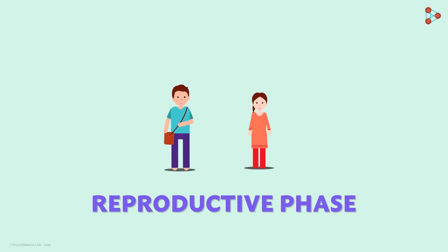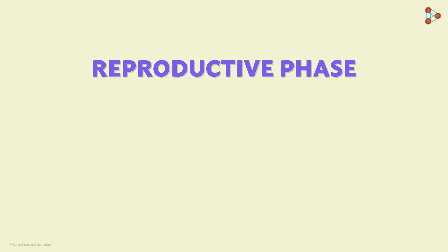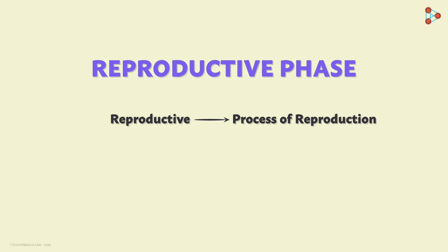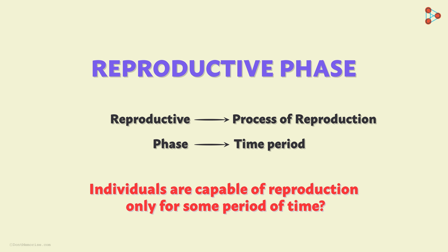The term 'reproductive phase' refers to the time period during which an individual is capable of reproduction. The word reproductive means the process of reproduction, and phase means the time period. Individuals are capable of reproduction only for some period of time, and this is applicable specifically in the case of females.